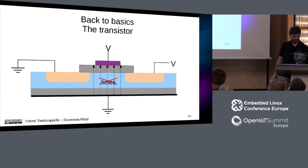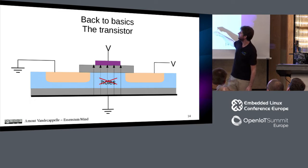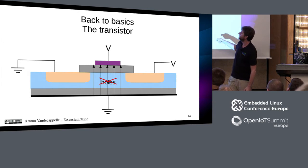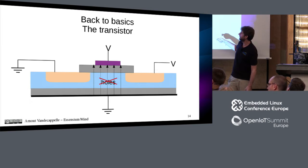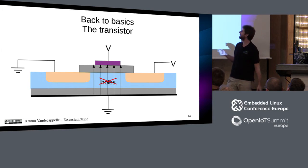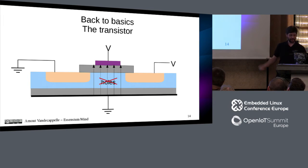How a transistor works: by putting a voltage on the gate, you create an electric field. This electric field eliminates holes, which means what looks like a P-type semiconductor becomes less P-type — closer to N-type — and allows electrons to pass through. You get a conducting channel, called the channel of the transistor, which allows current to flow. The electrons go one way, the current goes the other way. That's how a transistor works.